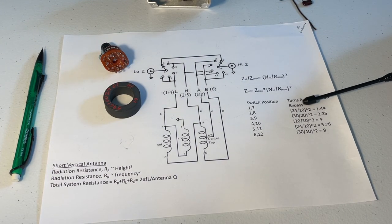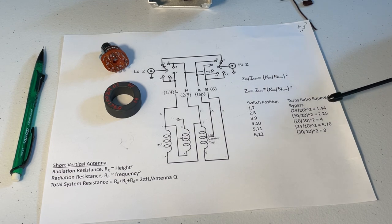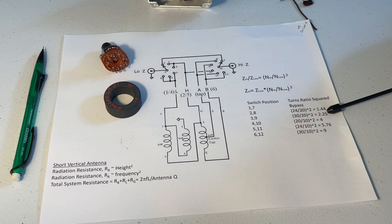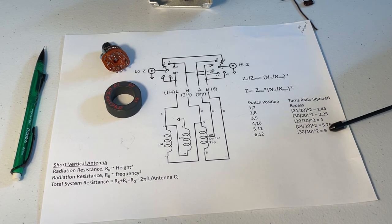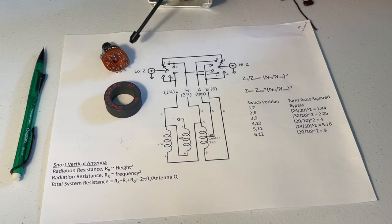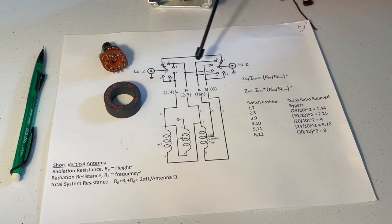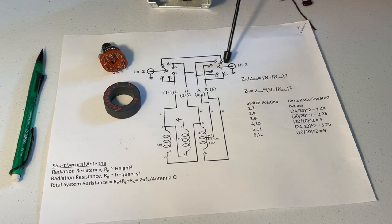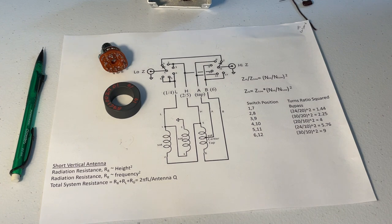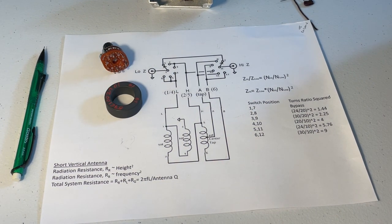But you do that for all the positions, you get all of these ratios here. So in the first position you get a bypass. Second position you get a 1.44 ratio. Next position 2.25, you get 4, 5.76, and you get all the way up to a 9. So whatever the low impedance is on the antenna input, we're shifting that up by these amounts on the high side. And generally it will get a match to around 50 ohms and we'll get a good SWR and can use the antenna.